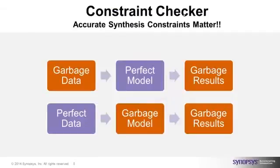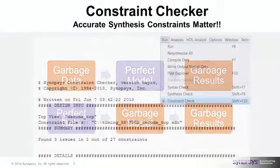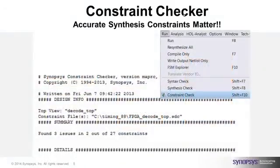Accurate synthesis constraints are key to getting the very best quality of results for area and timing in your design. You can use the built-in constraint checker to flag any inapplicable constraints or syntax errors in your constraint files. There's also a check FDC query command which runs the constraint checkers specifically for object query commands — things like get_cells, get_nets, and so forth.